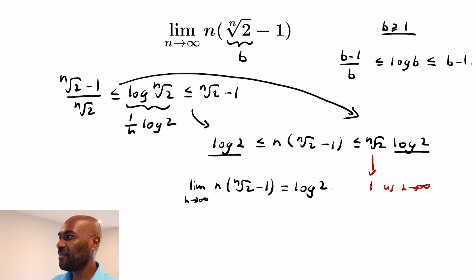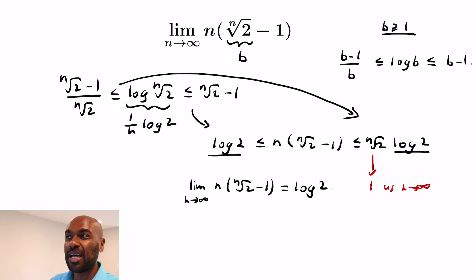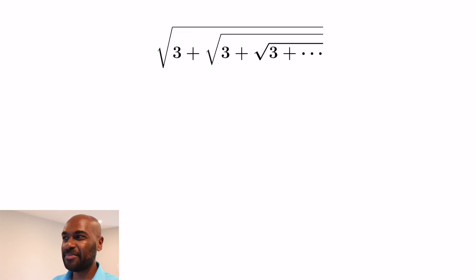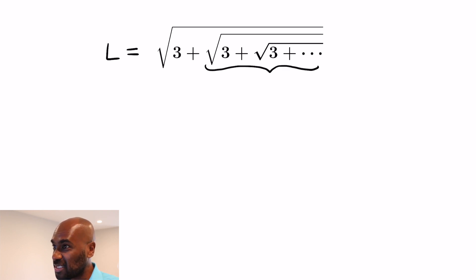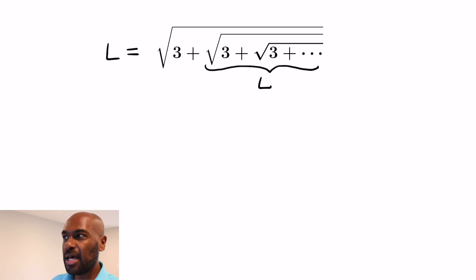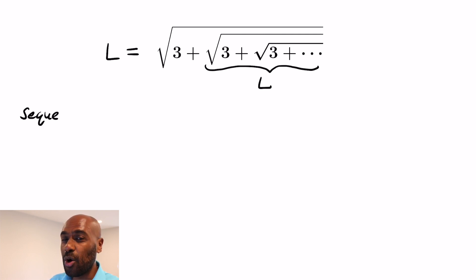Very cool idea — it came from the log inequality, which had the nth root of 2 minus 1 times n encapsulated in it. Finally, I want to look at this peculiar expression: iterated square roots with 3's inside. If we let L be this entire expression, we notice that L sits inside of itself. We might think to solve for L directly, but the problem is: how do we know this expression converges in the first place?